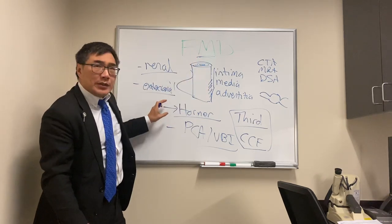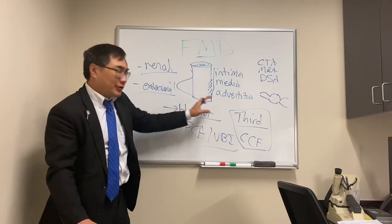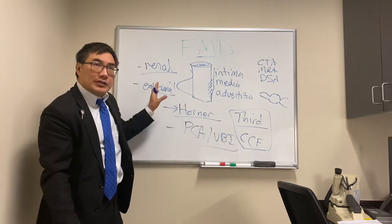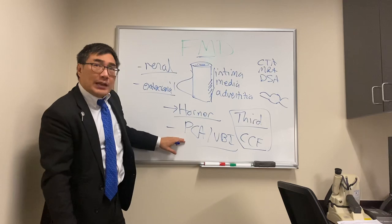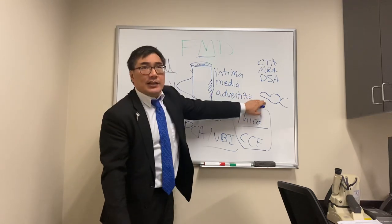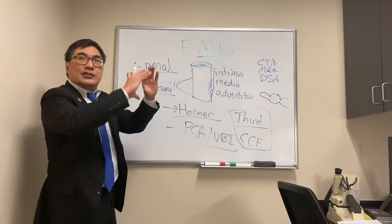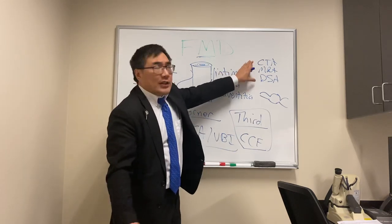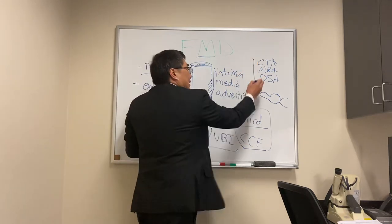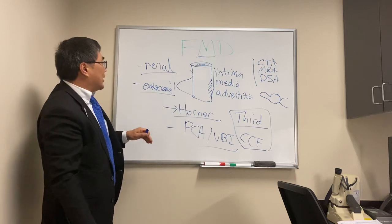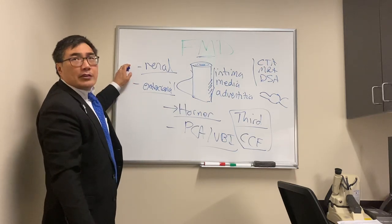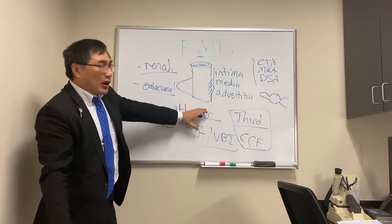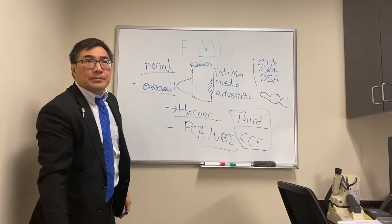Think about FMD in patients who have arterial wall disorders. It presents with big or small pupil, Horner's, third nerve palsy, carotid-cavernous fistula, aneurysm, or arterial dissection in young people — but it can occur at any age. Look for the stenosis-dilation-stenosis-dilation radiographic sign on CTA, MRA, or digital subtraction angiogram, and always be alert for renovascular hypertension in the setting of extracranial arterial disease.